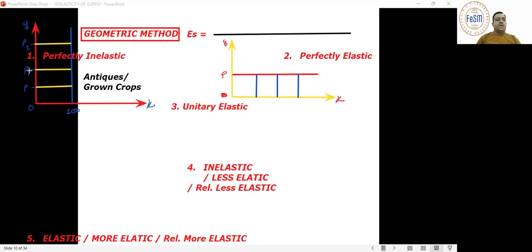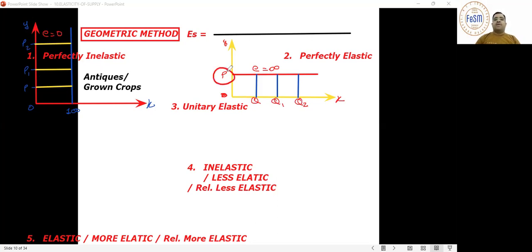Your price will remain fixed. Quantity could be Q, Q1, and Q2. This is called perfectly elastic: infinite quantity could be sold at a given price. If the price drops even slightly, the seller says 'I'm leaving this market.'